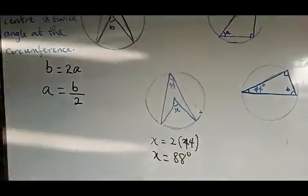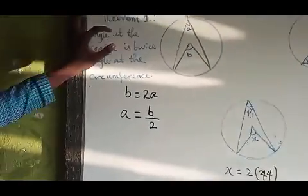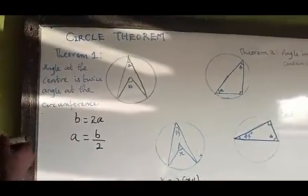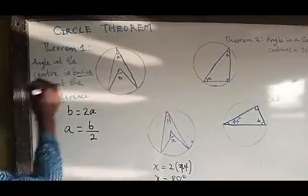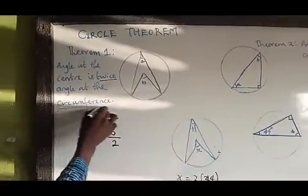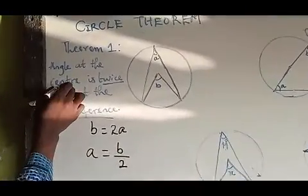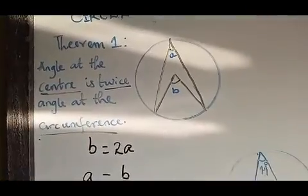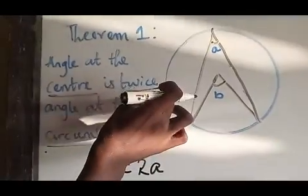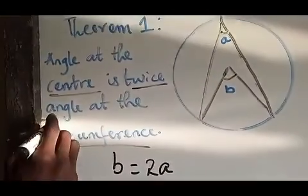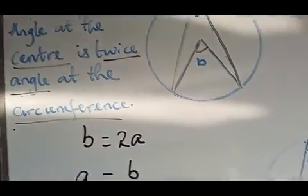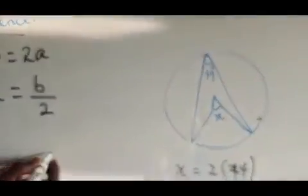Don't forget the theorem: the angle at the center of the circle is twice the angle at the circumference. The center angle is twice the angle at the circumference. Those are the three major words to remember.